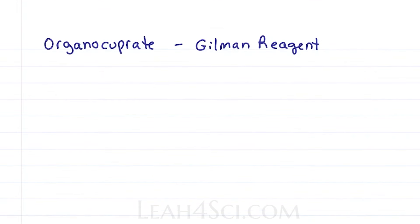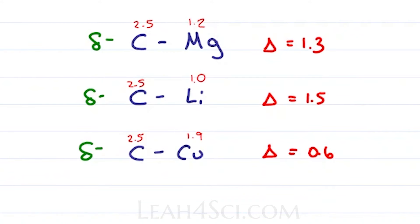Last but not least, let's take a look at organocuprate, also called the Gilman reagent or the diorganocopper reagent. This is a more reactive form of just a carbon bound to a copper because if you'll remember, the electronegativity difference between carbon and copper is very low.